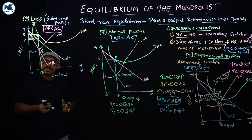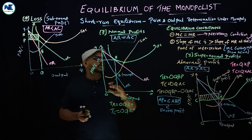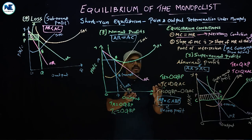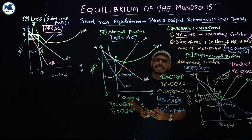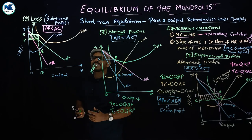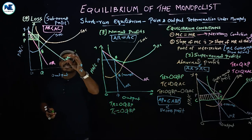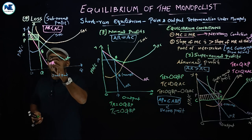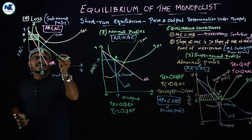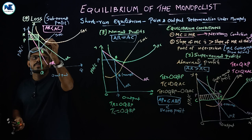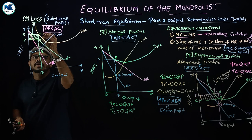We will examine three possibilities: supernormal profit, normal profit, and loss. This is the normal case we are discussing. This is the short-run marginal cost curve. Points S and T are marked on the graph.